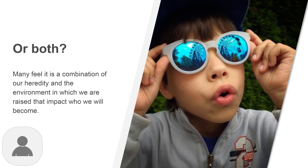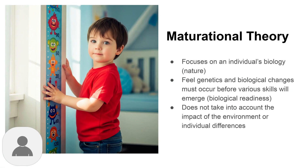This complex interplay between our inherited traits and our experiences shapes who we become, with each factor influencing how the other is expressed. The maturational theory represents one of our earliest systematic approaches to understanding child development.